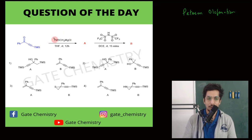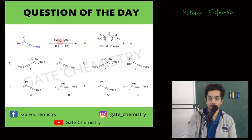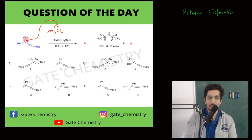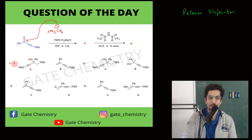The Grignard reagent gives 1,2-addition. You can write it as CH₂⁻ with a TMS group attached. This CH₂⁻ is going to react with the carbonyl carbon and form an alcohol. So as you can see, options 1 and 2 both show formation of an alcohol.